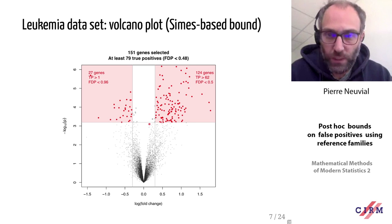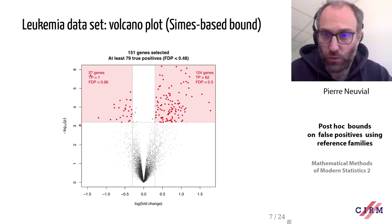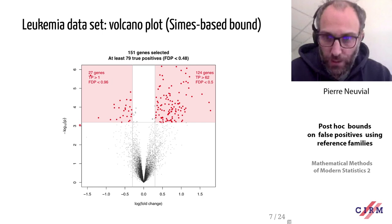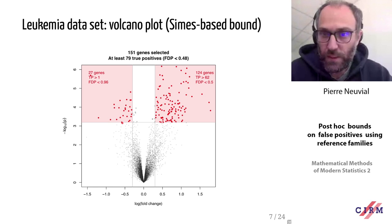Applying this to our example: among the 151 selected genes (red dots on the volcano plot), at least 79 are true positives, meaning the false discovery proportion is less than 48% with probability 0.95. Importantly, if the user changes the p-value threshold or the fold-change threshold, we can still compute V_α(S) and obtain a valid statistical guarantee — making this a very powerful and flexible tool.